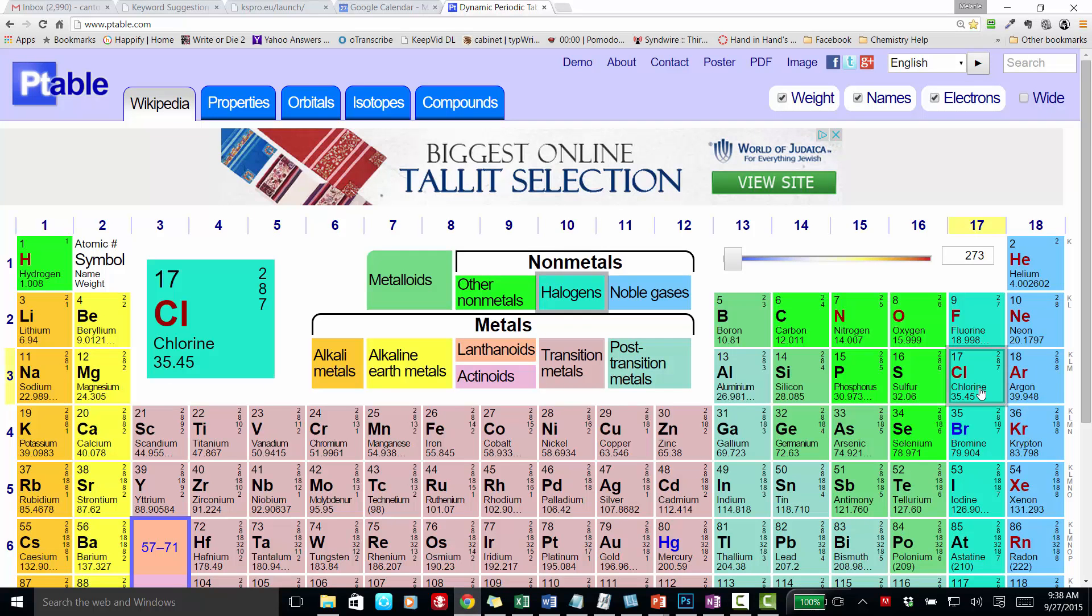When we look at a periodic table, we see that chlorine, a neutral, well chlorine, all chlorine atoms or ions have 17 protons.